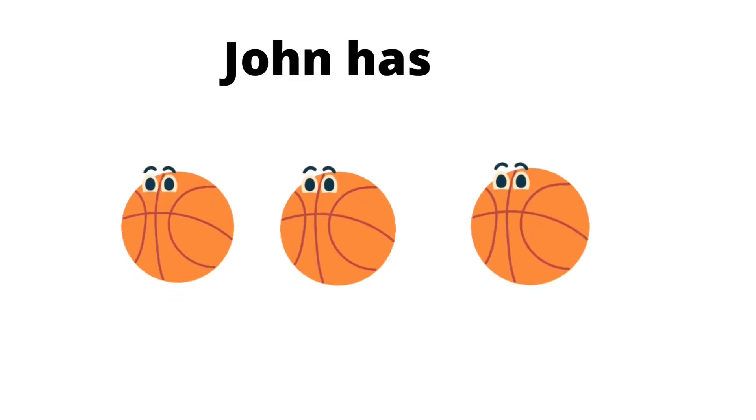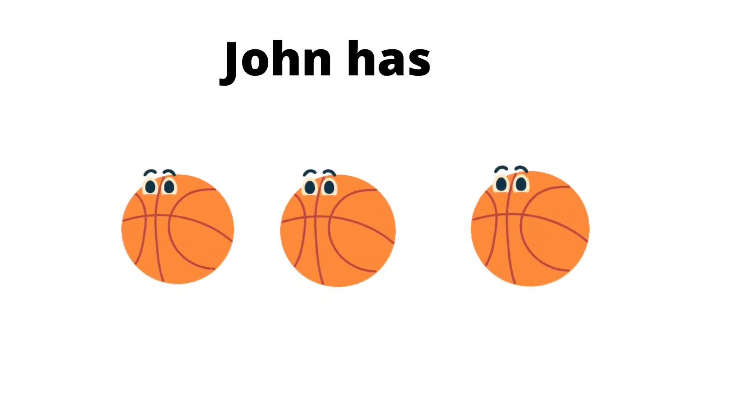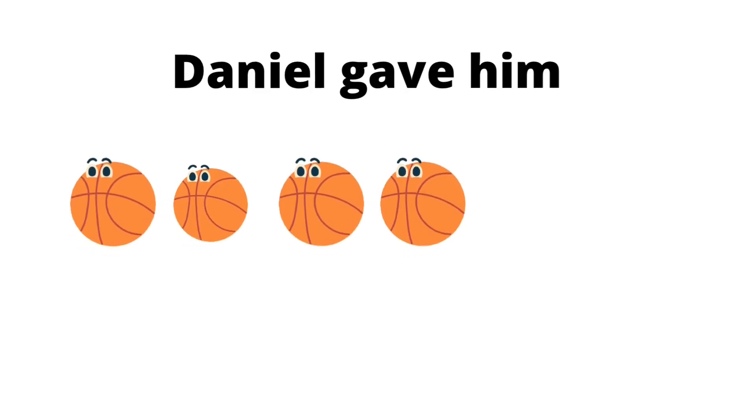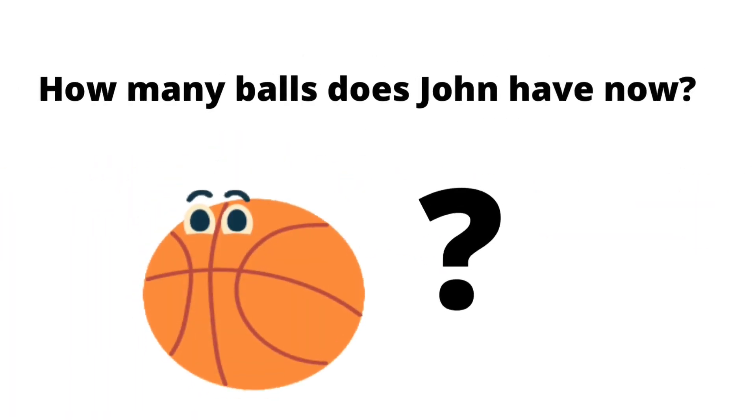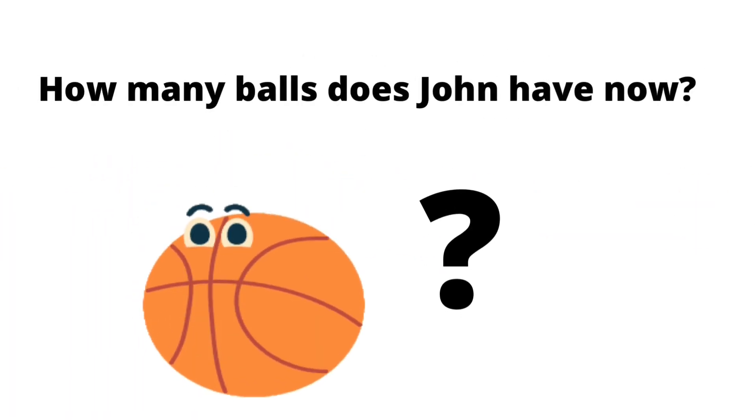John has three basketballs. Daniel gave him four more basketballs. So, how many basketballs does John have now?